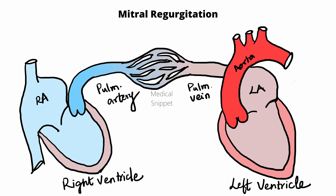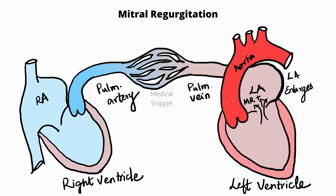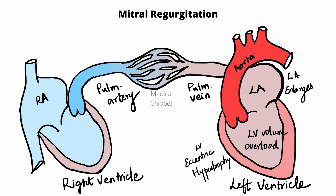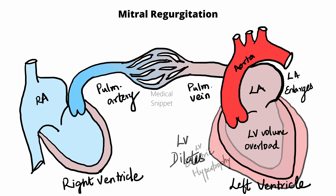ECG changes in mitral regurgitation are similar to mitral stenosis. In mitral regurgitation, the leaflets of the mitral valve don't coapt well, leading to leakage of blood into the left atrium during ventricular systole. Thus, there is volume overload to the left atrium. This causes the left atrium to enlarge. The increased volume of blood in the left atrium reaches the left ventricle, causing left ventricular volume overload, leading to eccentric left ventricular hypertrophy, and with time the left ventricle dilates.